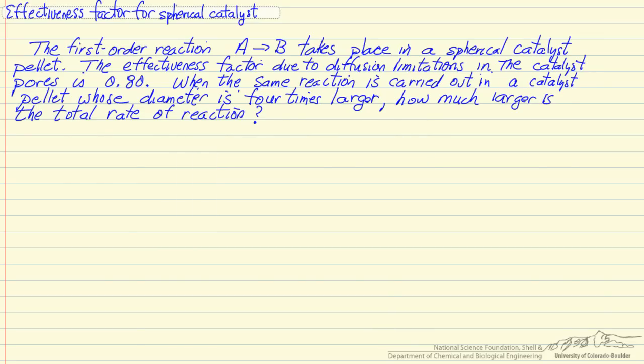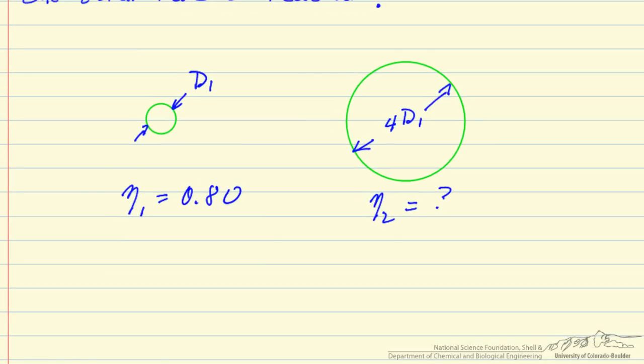So the first thing we want to do is write down the information we have, make a diagram. So the effectiveness factor is going to change, it's 0.8 for the smaller particle, it's going to decrease for the larger particle because of the longer diffusion distance.